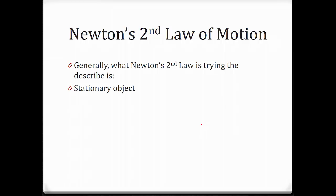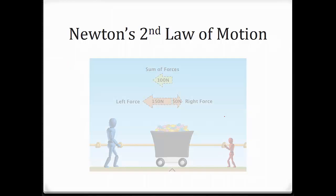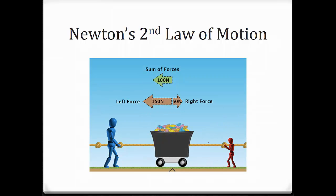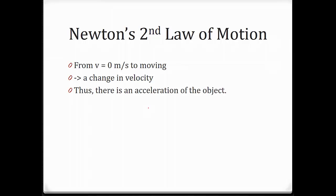For a stationary object, basically if the object is subjected to an unbalanced force, it will start to move towards the stronger force. This is actually quite logical, as in the tug of war. If you have a stronger person versus a weaker person — say this person pulls 150 and this person pulls 50 — the rope would start to move towards the stronger person. So from stationary, to start to move towards the stronger side means that there's a change in velocity, and whenever there's a change in velocity, that means there's an acceleration of the object, or acceleration not equal to zero.